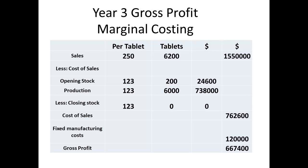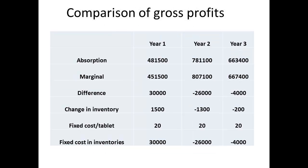In year 3, we have sales of $1,550,000 and all 6,200 units are sold. The cost of sales is therefore $762,600. If we look at the gross profit year by year for each method, we shall see there are differences. In year 1, absorption gives a higher figure for gross profit of $30,000. But in year 2, marginal costing gives a higher figure by $26,000, and in year 3, marginal costing gives a higher figure by $4,000.